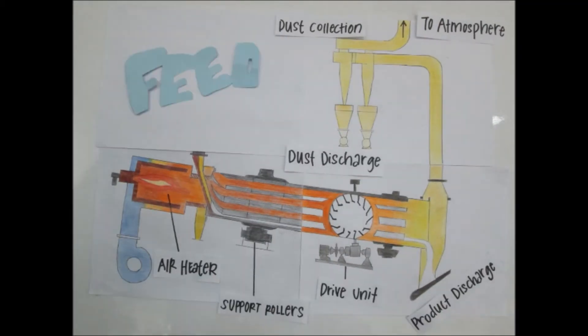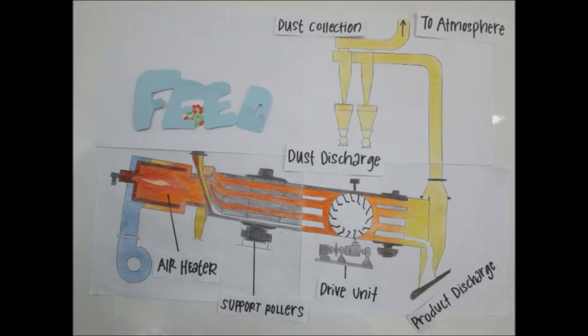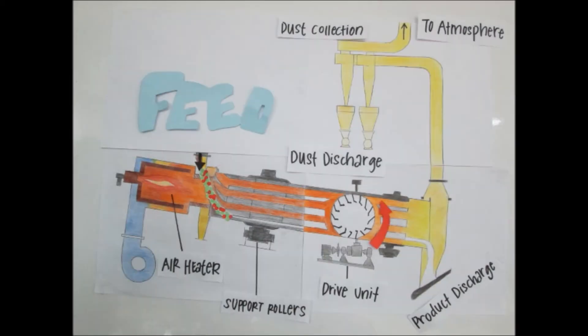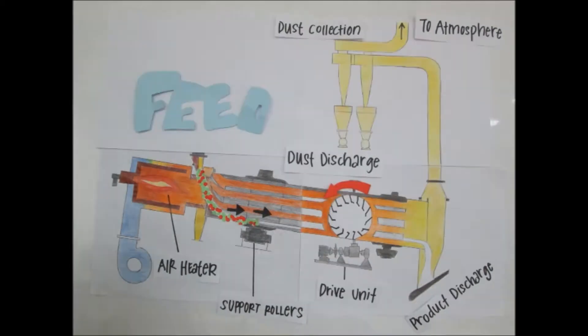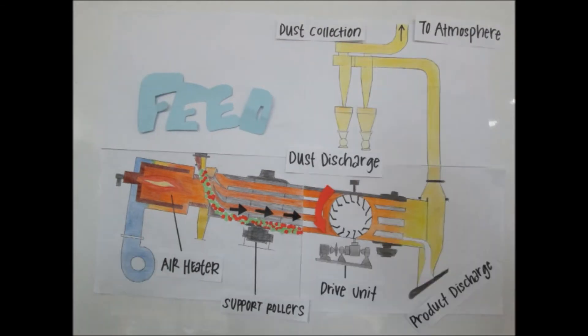In a co-current dryer, the feed first enters the dryer. Wet feed is in contact with the hottest drying gases supplied from an external source, where heat transfer is by convection.